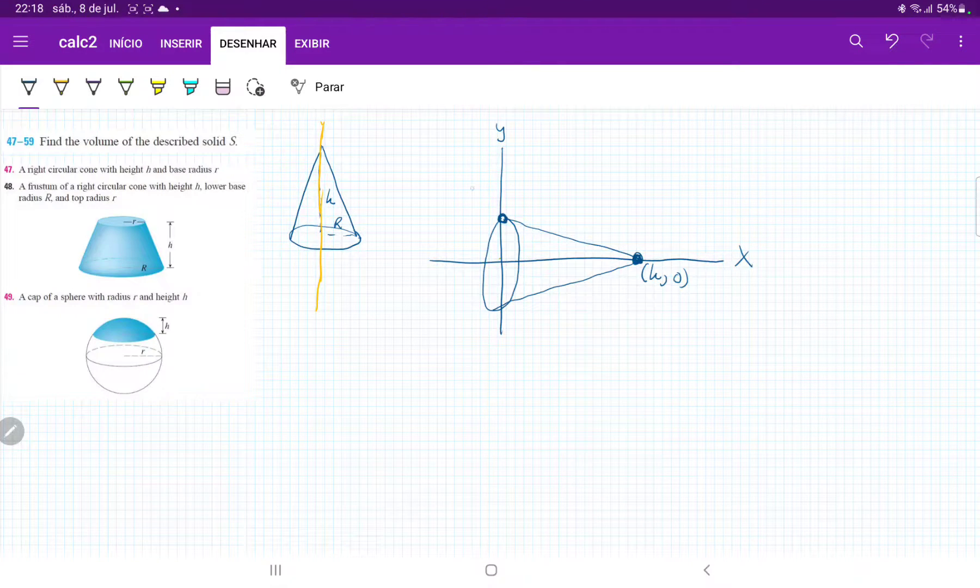And our y-intercept is 0 on the x-axis, and on the y-axis is going to be the height of the radius. It's going to be 0r.